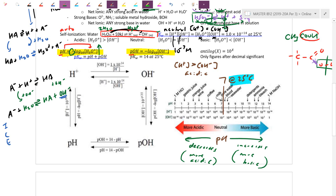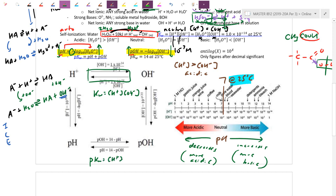If H+ is fairly high, the negative log drops the pH. If hydroxide is low, the pOH would be relatively high — both indicating acidic. For neutral water, H+ equals OH-. If you add acid or base, you can navigate using the relationships: Kw equals H+ times OH-, and in logarithmic form, pH plus pOH equals pKw.